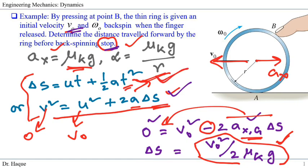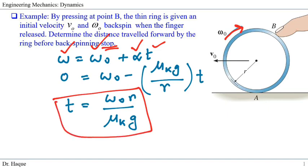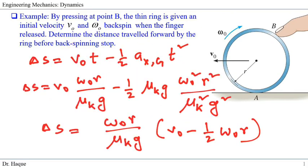To verify using the second method, we need time t. We haven't yet used the given angular velocity ω₀. When the ring stops, final angular velocity is zero. Using ω_final = ω₀ - α·t: 0 = ω₀ - (μk·g/r)·t, giving t = ω₀·r/(μk·g). With t found, we substitute into Δs = v₀·t - ½·(μk·g)·t², noting the negative sign because the ring is decelerating.